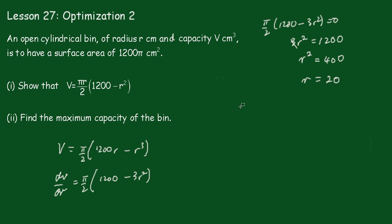So r is positive, so now we've got a maximum capacity. All we need now is to substitute that back into the formula.